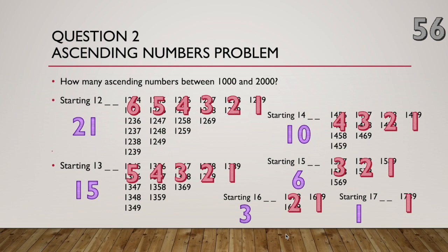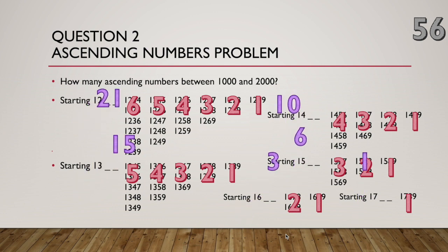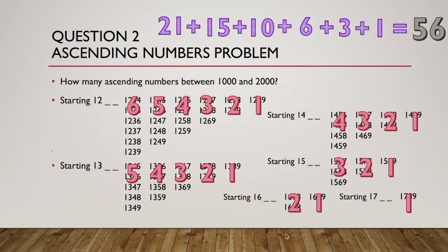And it's triangular numbers that links into this question. So, all together, there is this sum. We have 21 plus 15 plus 10 plus 6 plus 3 plus one numbers that are ascending between 1,000 and 2,000. So, even though there may be 9,999 numbers between 1,000 and 2,000, only 56 of those are ascending numbers.